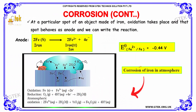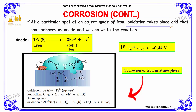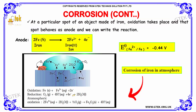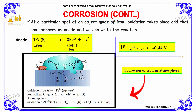At a particular spot of the iron object, oxidation takes place and that spot behaves as the anode. The reaction can be written as: Fe → Fe²⁺ + 2e⁻, with an electrode potential of −0.44 volt.